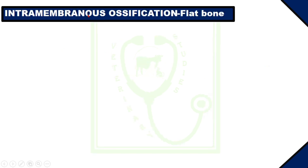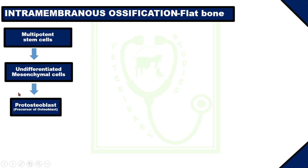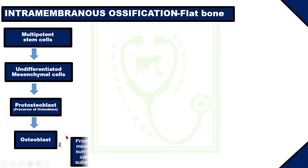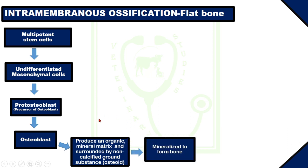Now, how are bones developed by intramembranous ossification? In intramembranous ossification, multipotent stem cells of the embryo transform into undifferentiated mesenchymal cells. These mesenchymal cells develop into proto-osteoblasts, which are the precursor of osteoblasts, and they differentiate into osteoblasts. Osteoblasts produce an organic mineral matrix and are surrounded by a non-calcified ground substance called osteoid.